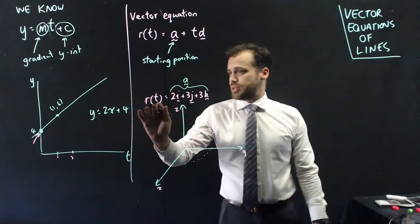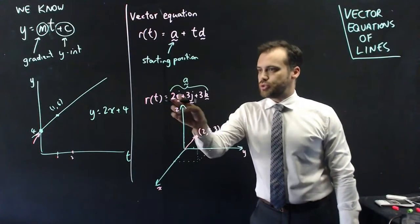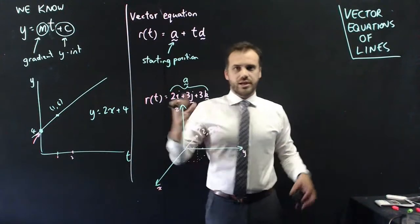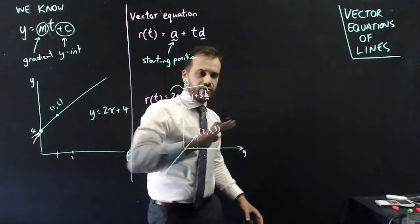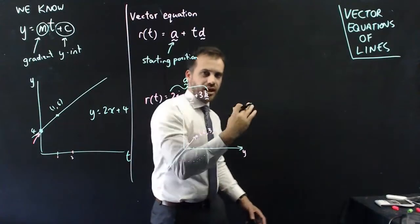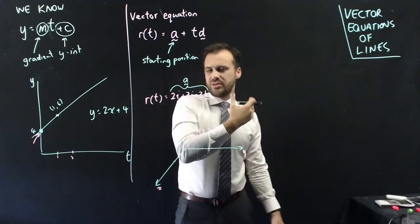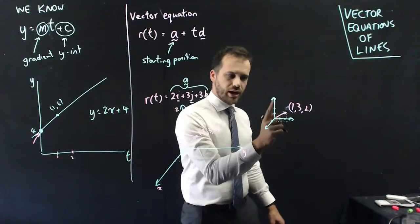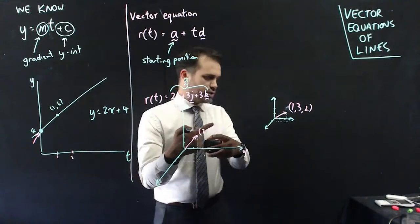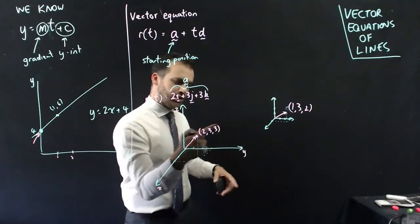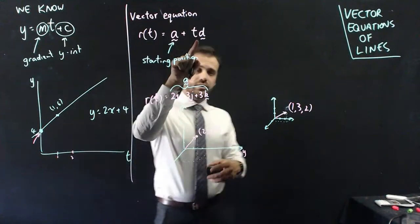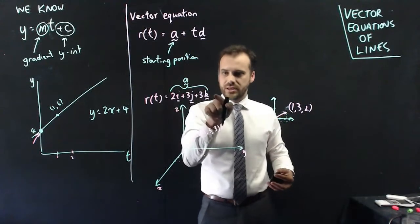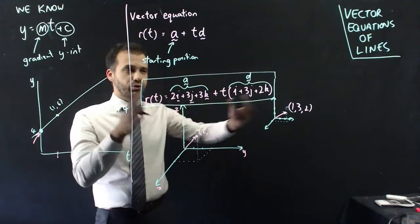So we can say that the vector equation r with respect to t is equal to 2i plus 3j plus 3k — this is our a value, our starting position. Now we need to say where our line is going to go. Our line might head off out of the page, across, and upwards a little bit — say 1 out, 3 across, and 2 up. So we take that direction vector and multiply it by t, giving us a full vector equation.